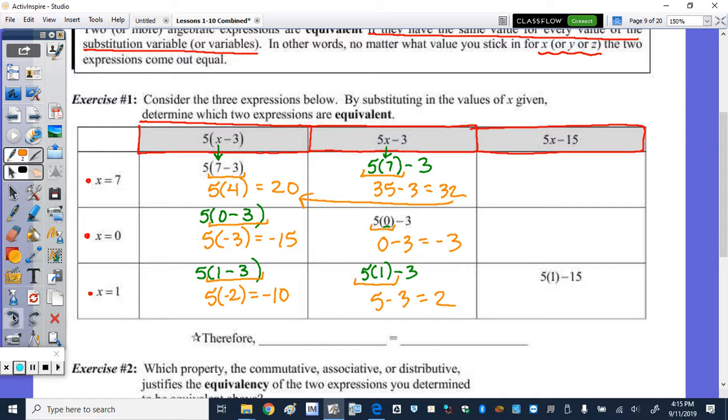So we need to do the math for the last column to see what we get for those values. I'm going to plug in 7 again. So we have 5 times 7 minus 15. Plug in 0. 5 times 0 minus 15. And then the 1 is already substituted.